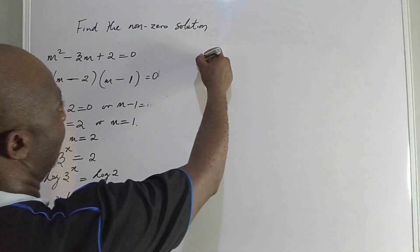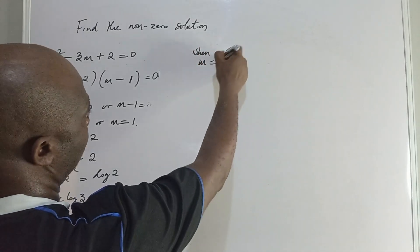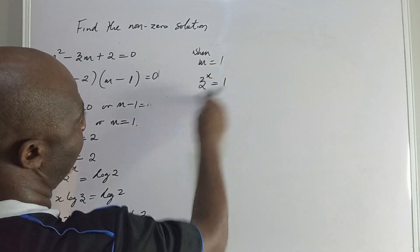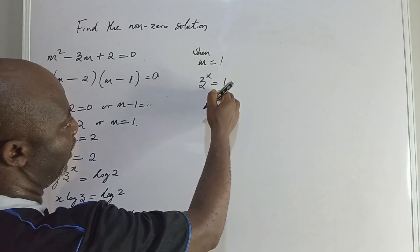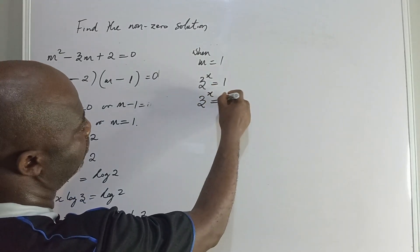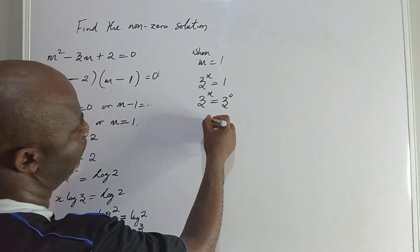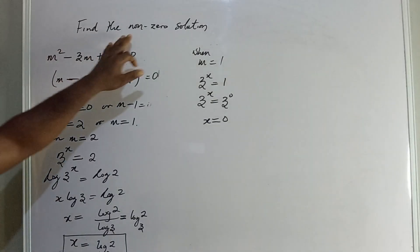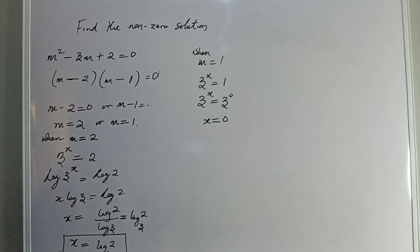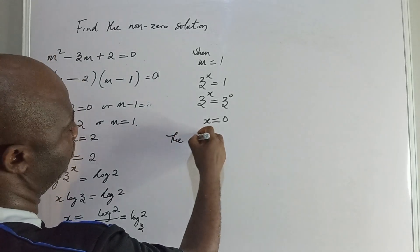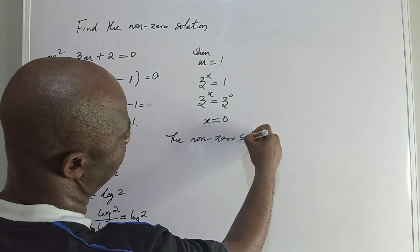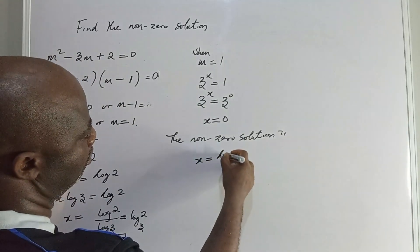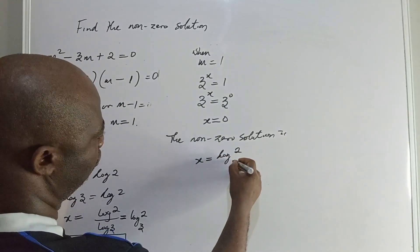The second value is when m equals 1. So we have 3 to the power of x equal to 1, which in index form gives 3 to the power of x equal to 3 to the power of 0, so x equals 0. But the equation asks for the non-zero solution, so the non-zero solution is x equal to log 2 to base 3.